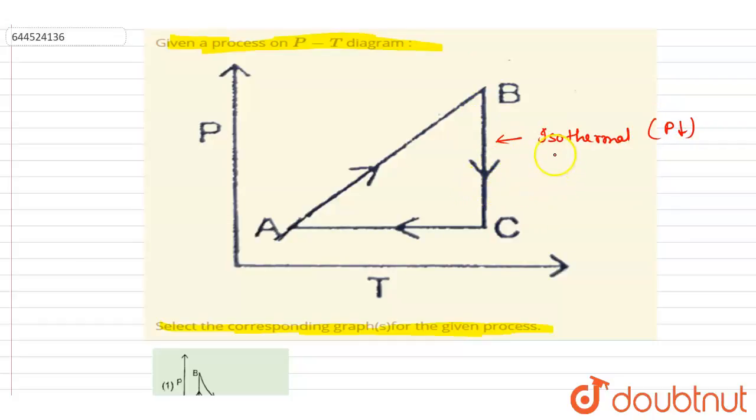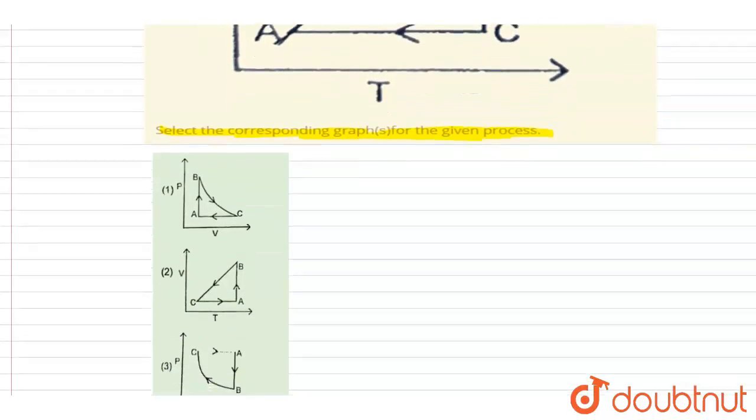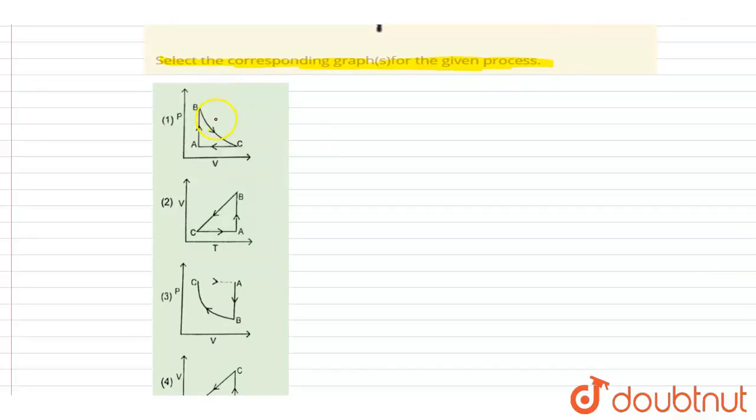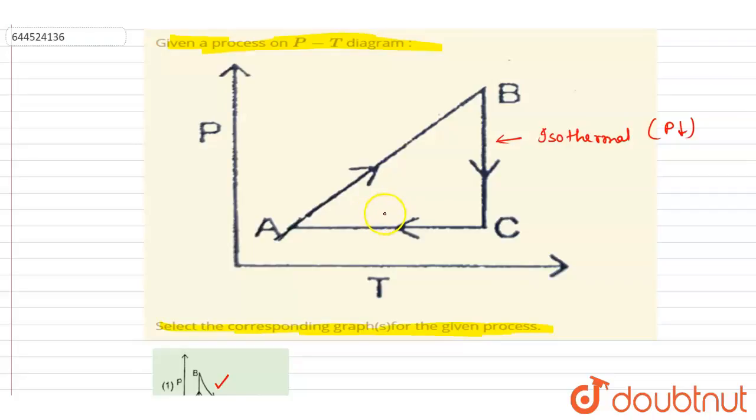B to C. Isothermal with pressure decreasing, right? So let us start with it. B to C isothermal with pressure decreasing. So the only curve which has that is this. Now let us come to A to C process, though we don't need to check because we already got the BC process isothermal, only one option.